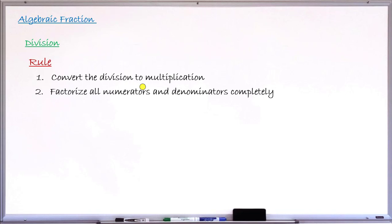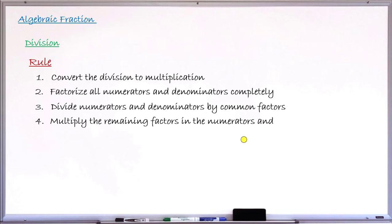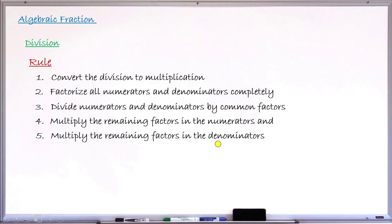Step number two says: factorize all the numerators and denominators completely. This is exactly the process we follow while multiplying two algebraic fractions, because we have changed the division to a multiplication problem. Step number three says: divide the numerators and denominators by the common factors. Step number four says: multiply the remaining factors in the numerator, and finally multiply the remaining factors in the denominator.